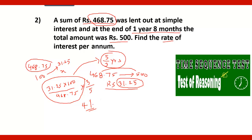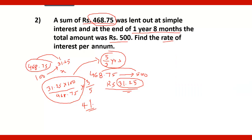To summarize: for 5/3 years, Rs.468.75 amounted to Rs.500. The difference is Rs.31.25, which is the simple interest received. For Rs.100 for one year, we divide by 5/3 years — that is, multiply by 3/5. Solving this gives the rate of interest as 4%.